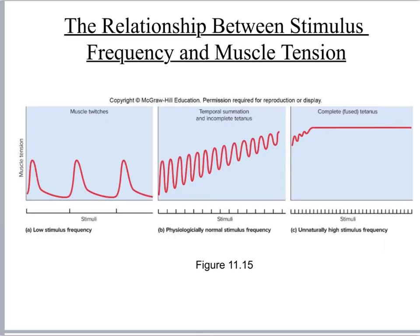This slide shows three graphs plotting stimulus strength versus muscle tension generated over time. In graph one, signals go back to a resting state between contractions — the muscle fully relaxes between each contraction. If you've ever seen a tick or rhythmic contraction in your body that relaxes afterwards, that's an example of a muscle twitch.